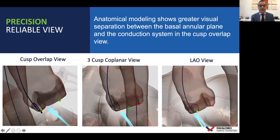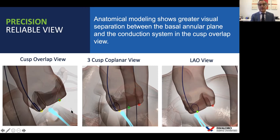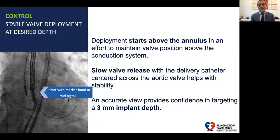This is the cusp overlap view — here is the non-coronary cusp, and here is the right and left superposition. This is the three-cusp coplanar view we have used for years, and this is the left view also used in the past for valve implantation. As shown in this graph, the conduction system appears lower in the cusp overlap view compared to these two traditional views. So we see the LVOT space with better elongation and can make a more precise implantation.